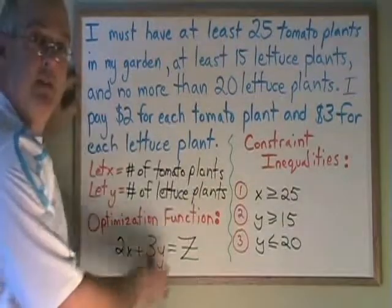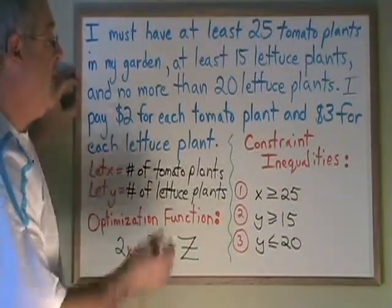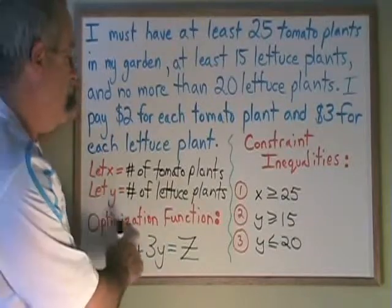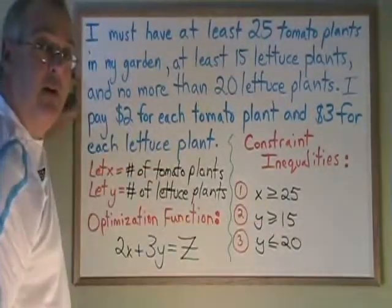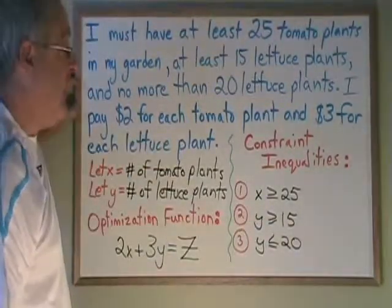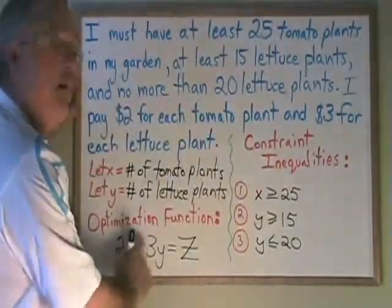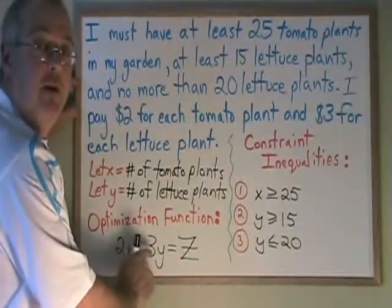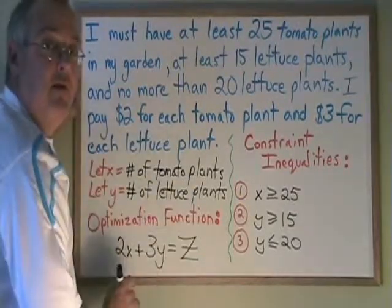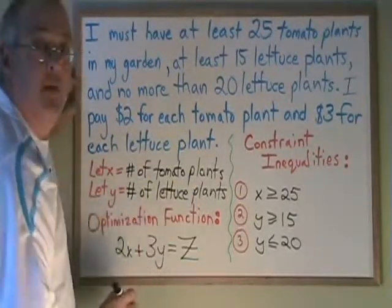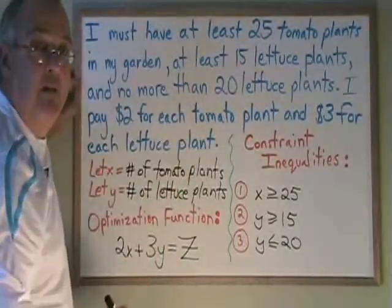This is a pretty simple situation, but it helps to illustrate what you have to do in order to create an optimization function and create your constraint inequalities. It also illustrates the difference between giving the constraints and the optimization function, and giving the elements of the constraints and the elements of the optimization function — which is the English language version of the same thing.